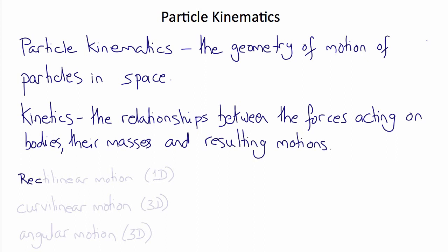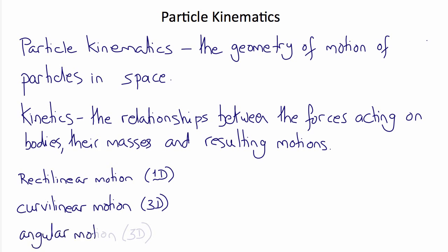We'll consider three types of motion: rectilinear motion, which means motion in a straight line or essentially one-dimensional motion; curvilinear motion, which means motion in three-dimensional space; and angular motion, which are also curvilinear motions in three-dimensional space but represented by radii and angles.